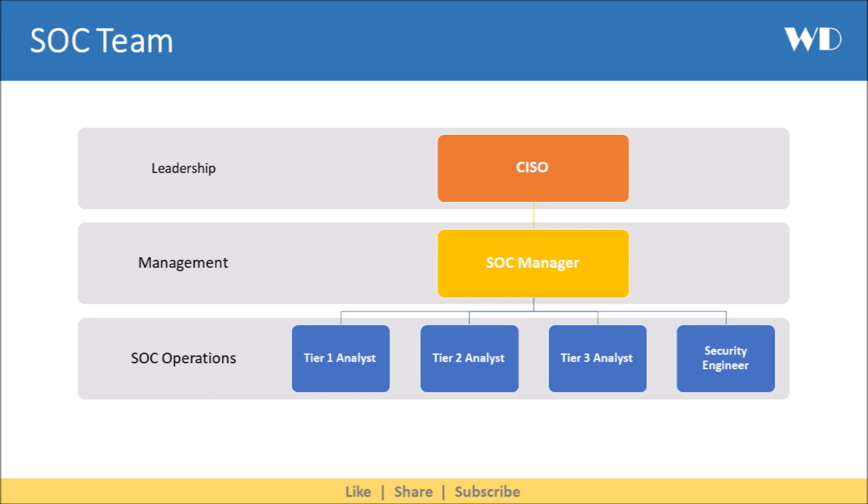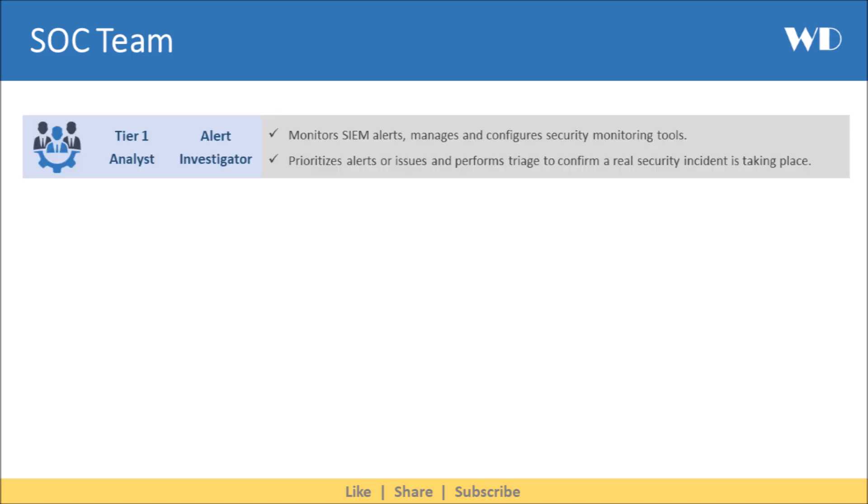How do you build a SOC team at your organization? The SOC team consists of a SOC manager who reports to the chief information security officer and manages the operations team. The operational layer consists of tier 1 analysts, tier 2 analysts, tier 3 analysts — also called subject matter experts — and a security engineering team. Let's understand these roles in detail.